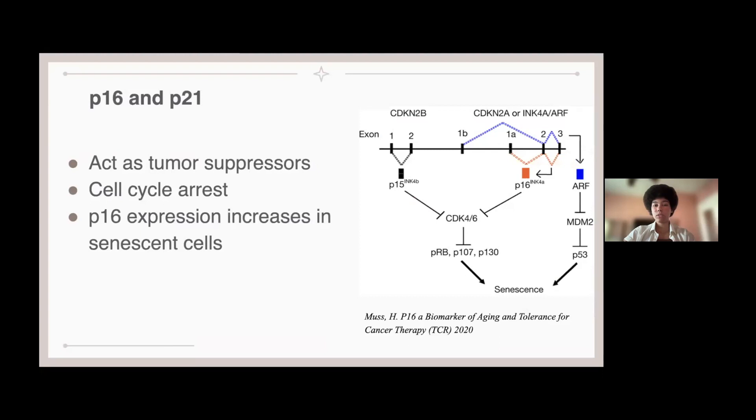And so P16 and P21 are INK4 proteins, and therefore they act as tumor suppressors. These are the main proteins we are looking for in our experiments because they indicate senescence.